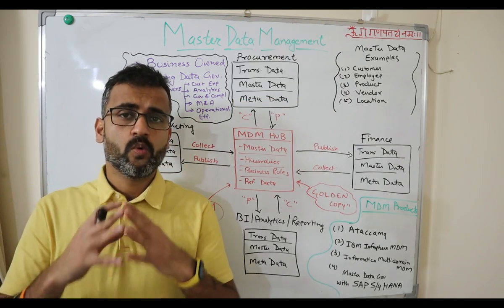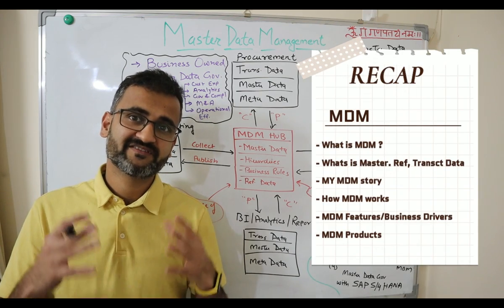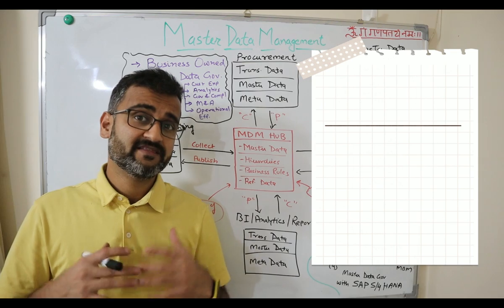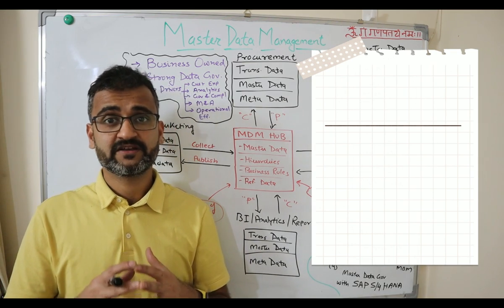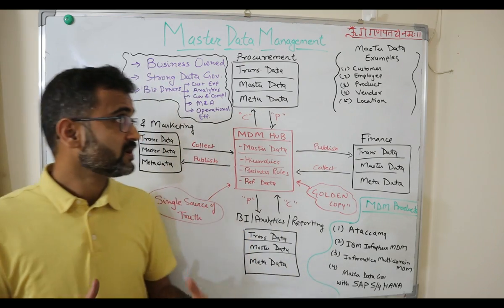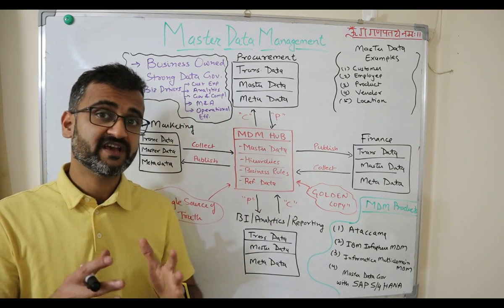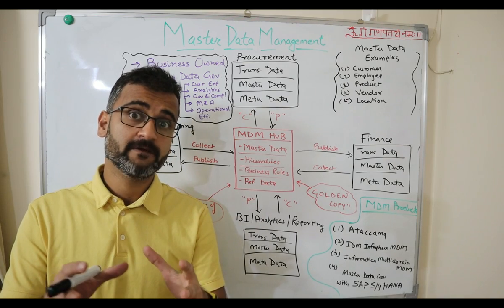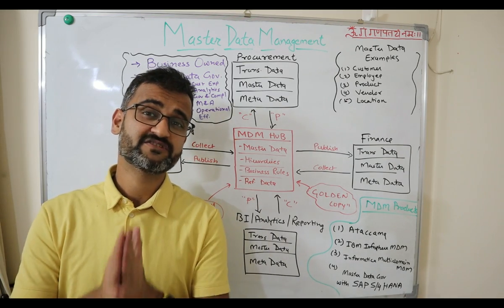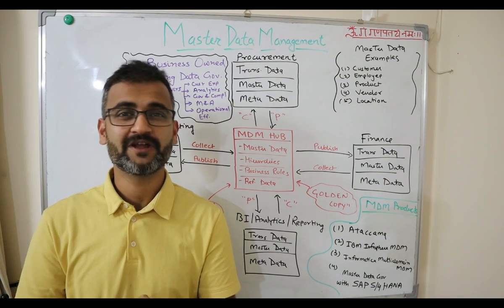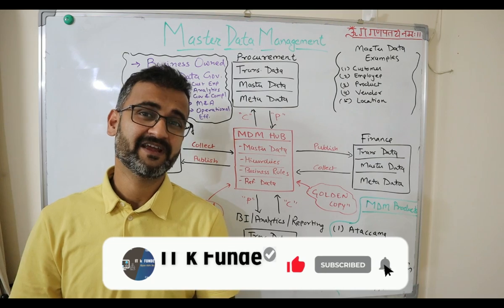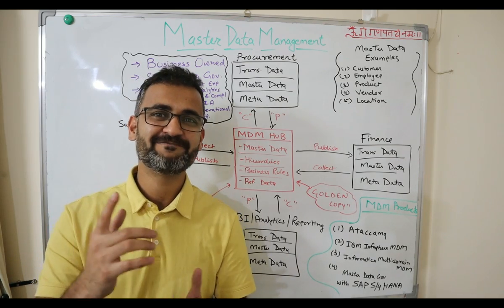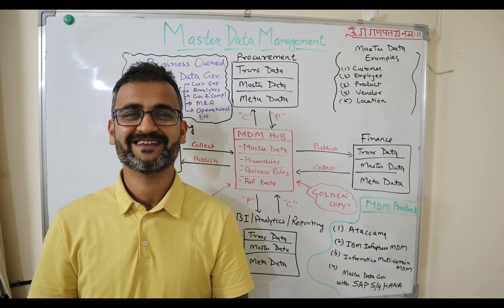To recap, we have covered what is MDM, what is master data, reference data, and transactional data. We learned from a personal experience how MDM can affect your business process. We understood how MDM architecture works, what some master data examples are, salient features of MDM, and five different business drivers which can drive the need for MDM in a particular enterprise. This brings us to the end of the video — I hope you learned something about MDM. If you did, please hit the like button, subscribe, and hit the bell icon so you know when I upload my next video. Keep learning, keep sharing your knowledge, and keep hustling. Bye for now.